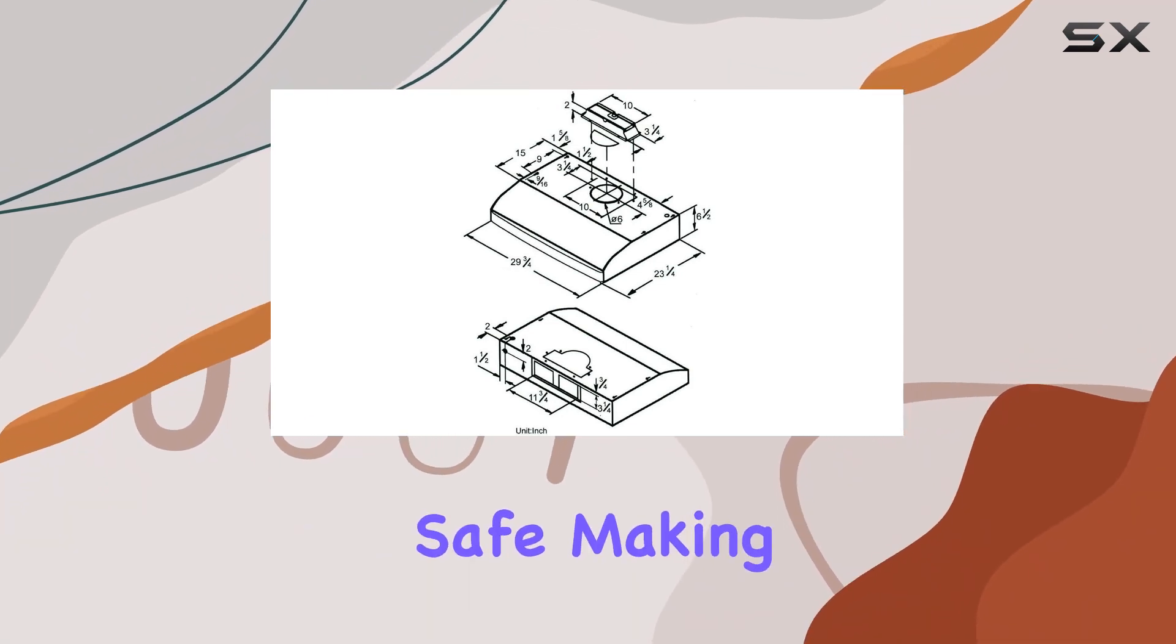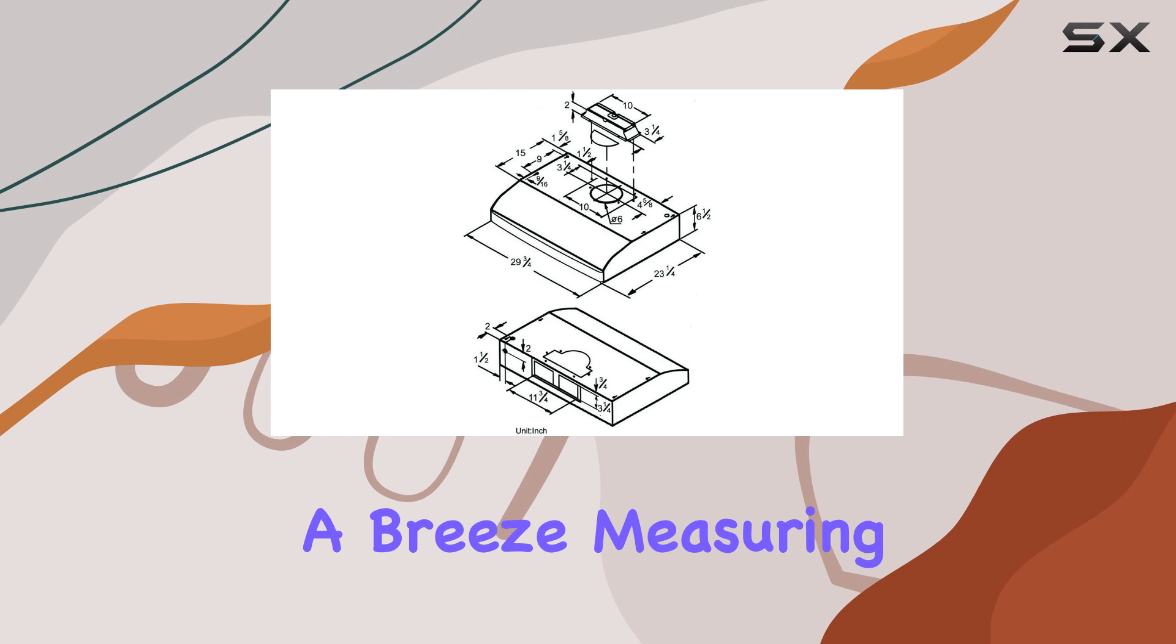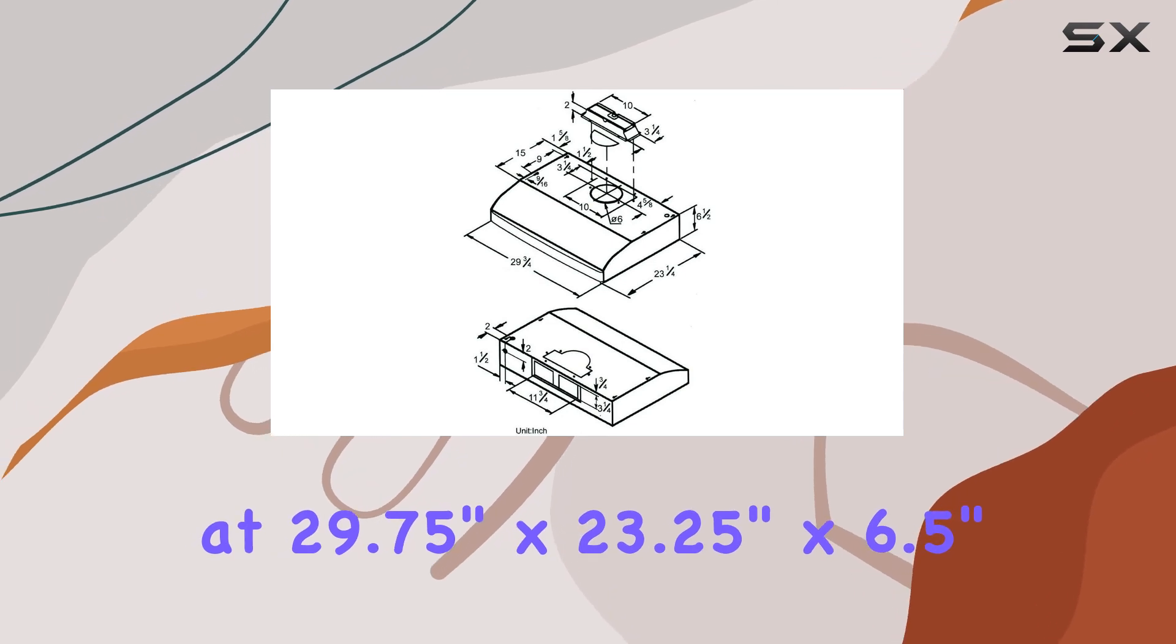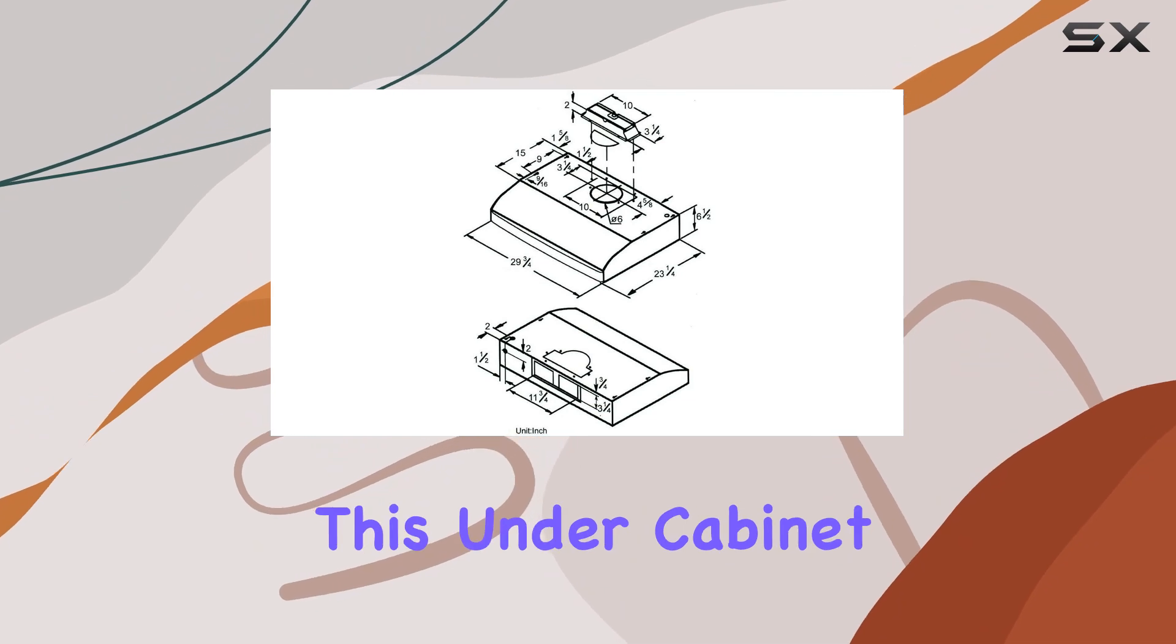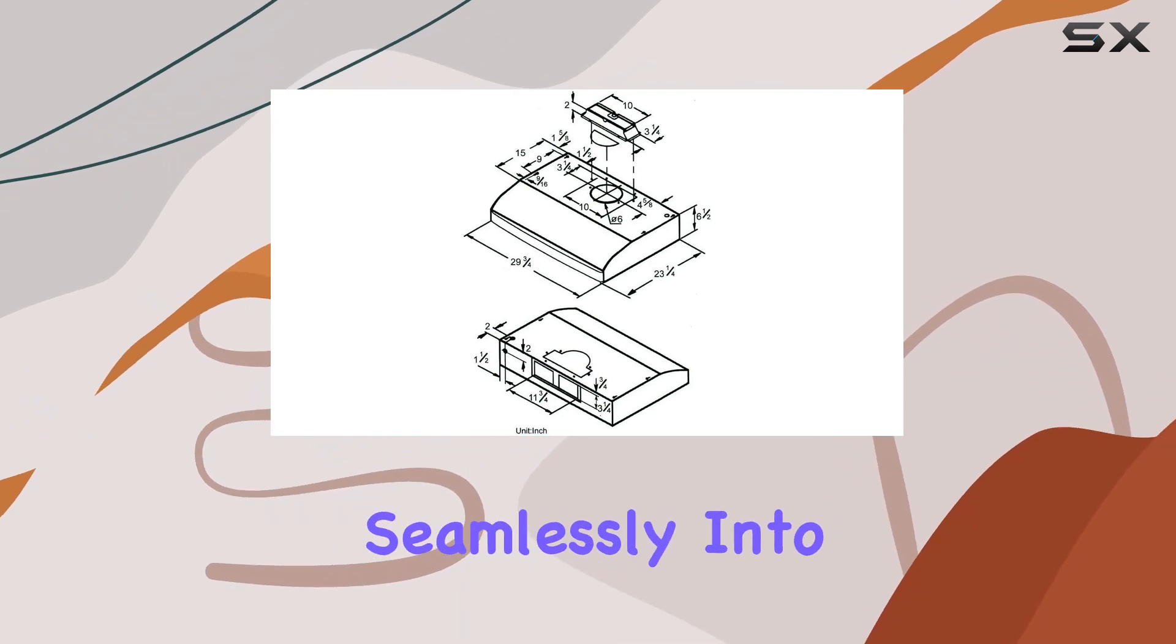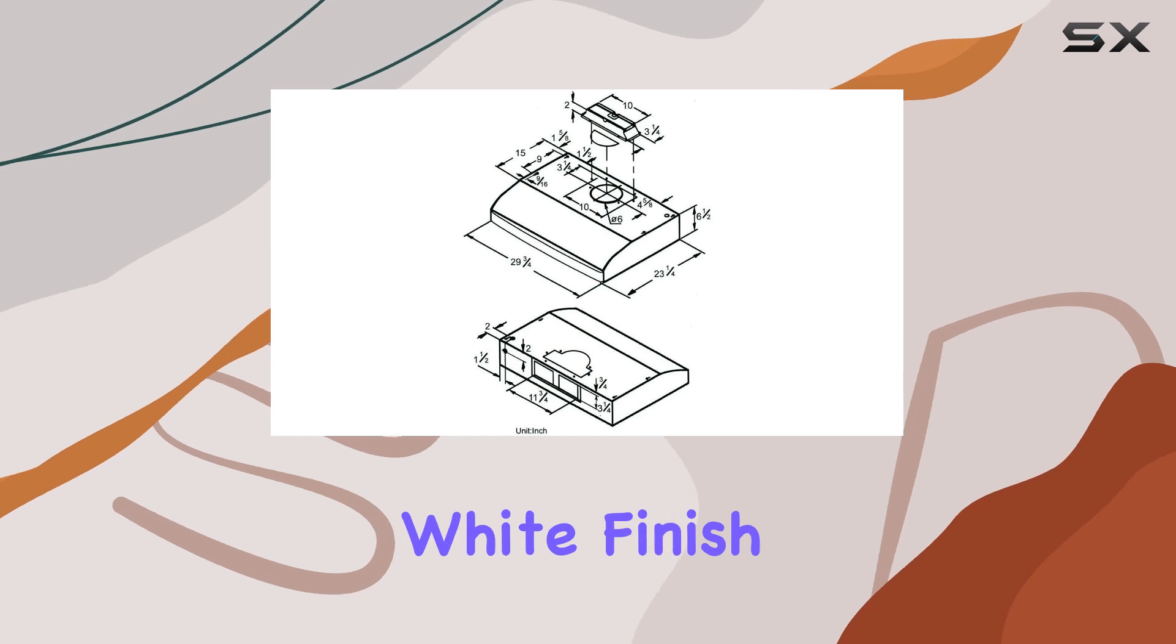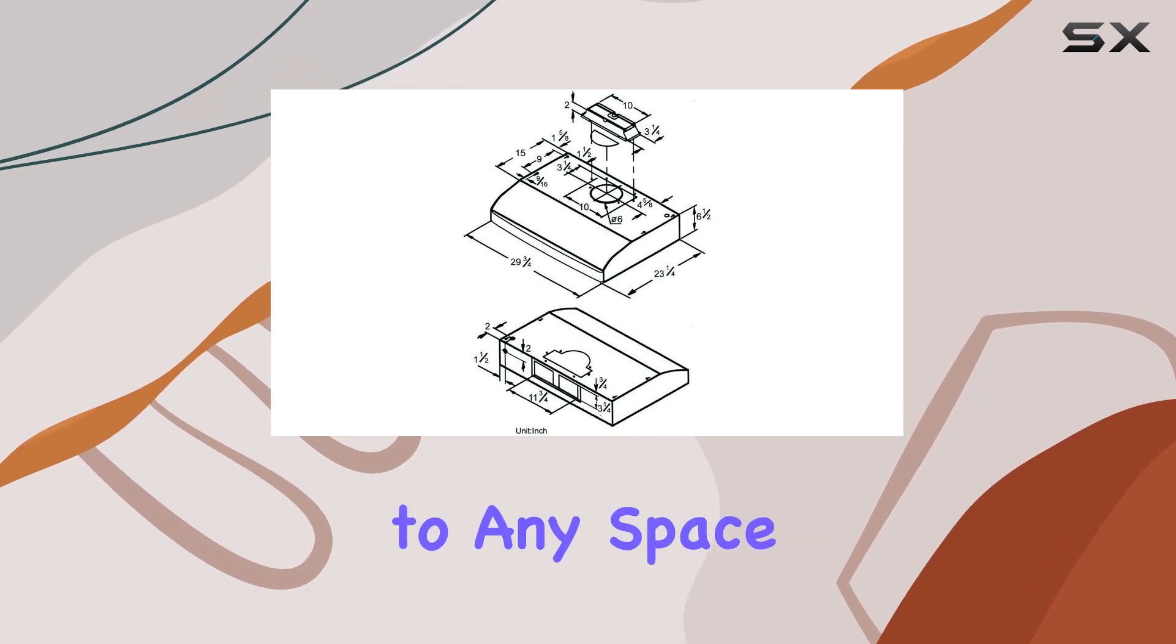Measuring at 29.75 inches by 23.25 inches by 6.5 inches, this under cabinet range hood fits seamlessly into most kitchen setups. Its elegant white finish adds a touch of sophistication to any space while complementing a variety of kitchen decors.